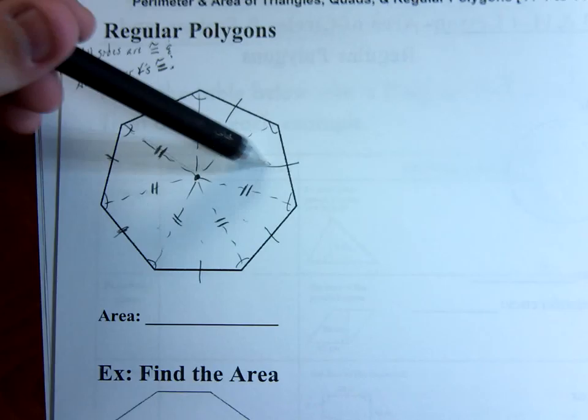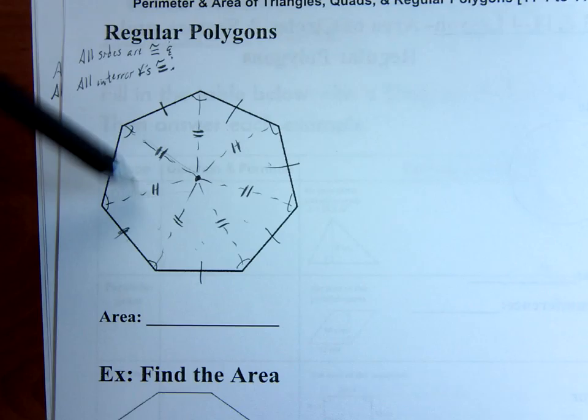We've now formed a bunch of triangles, and we can see that these triangles are all congruent to each other by side, side, side. Yep, all of them are congruent.